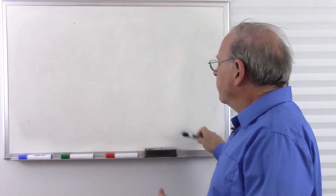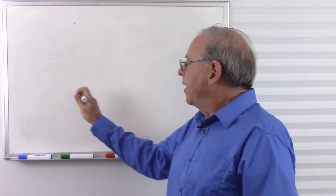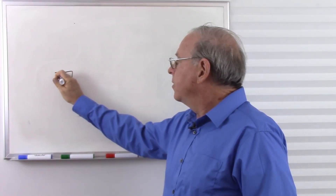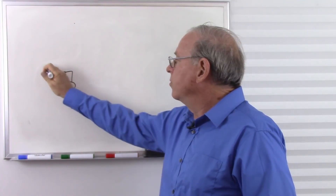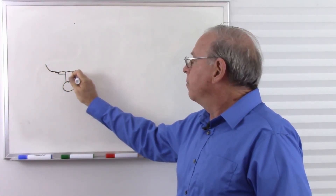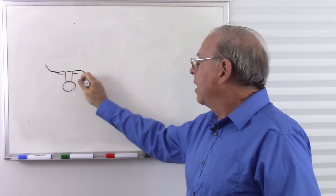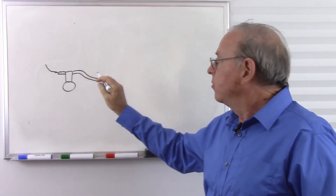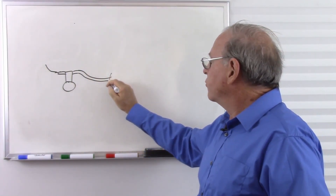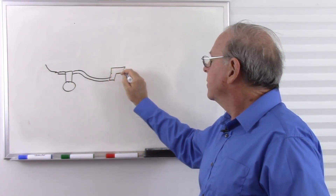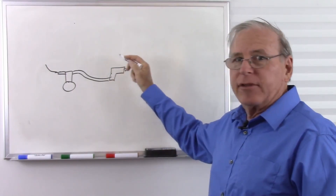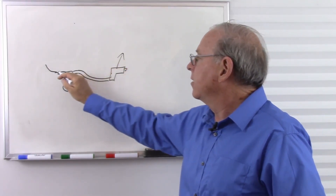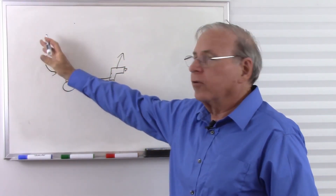Let's take a look at the pneumatic system again. We have a pump which is able to suck air in and blow the air back out. Let's say it goes to an air tool of some sort, and that air tool does some work, and then the air escapes back to the atmosphere.